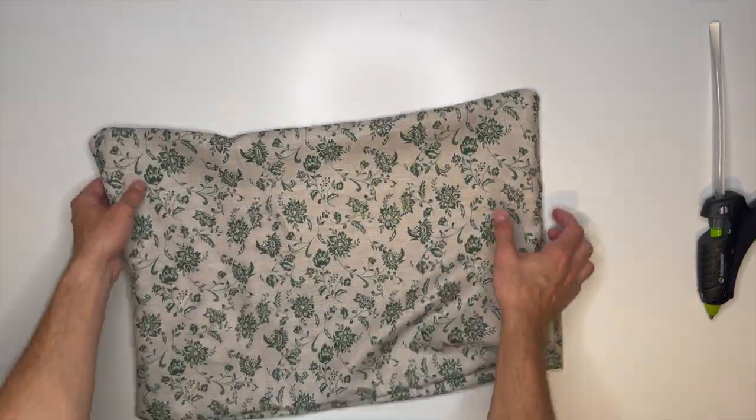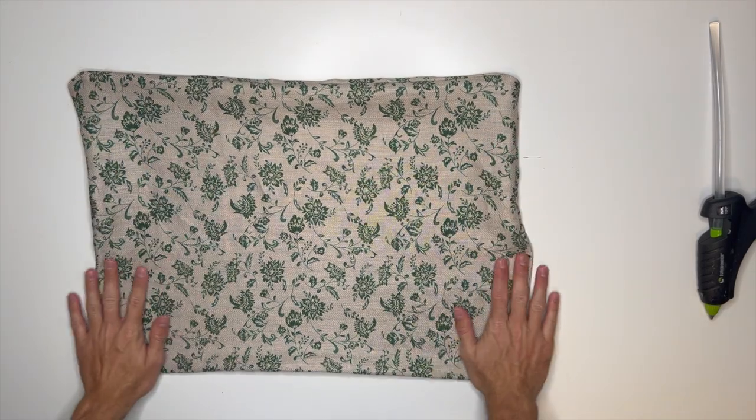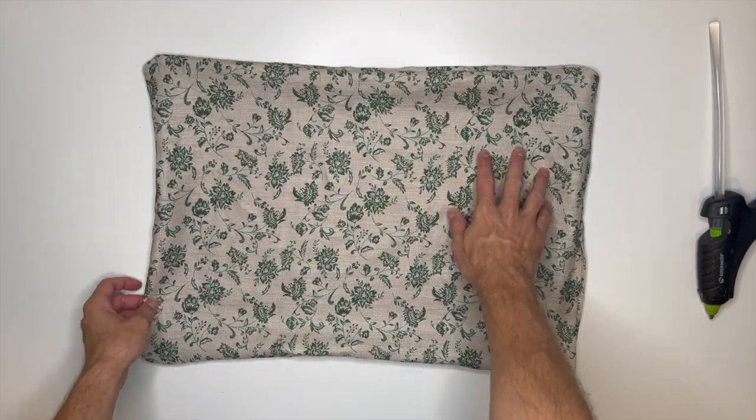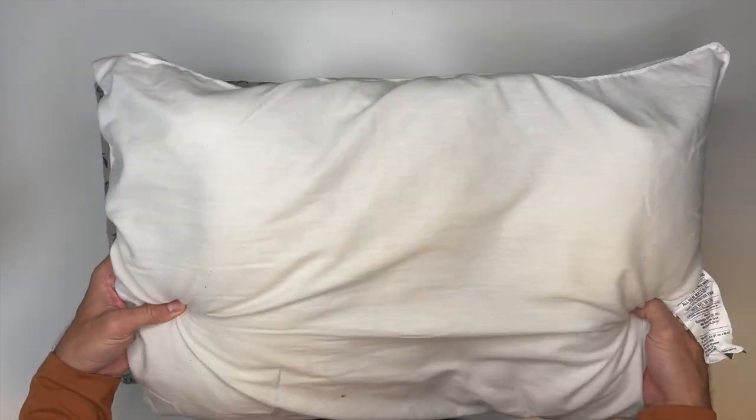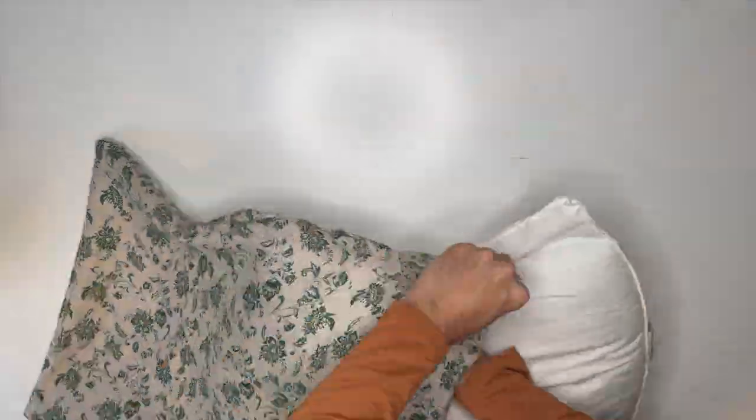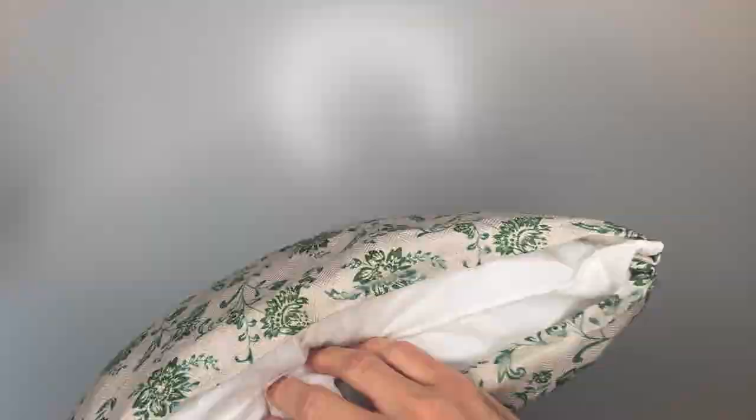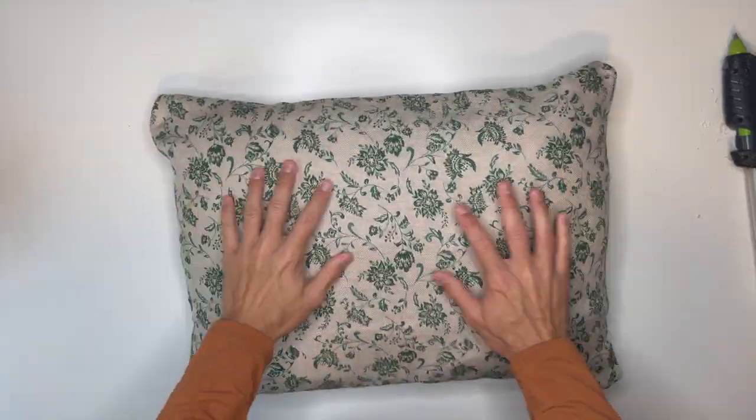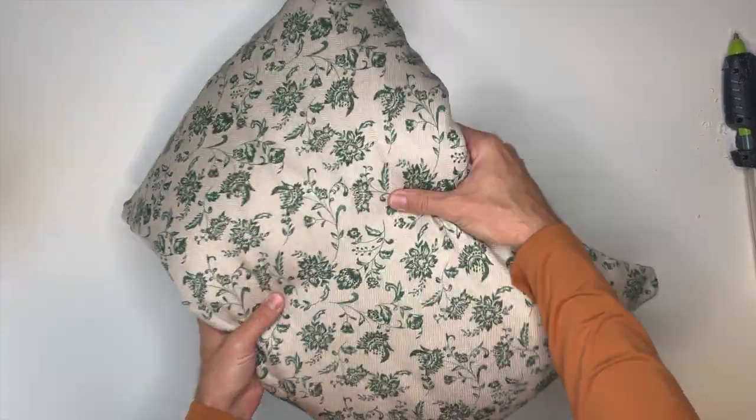And through the opening that we still have in the pillowcase, you could very easily stuff it with some polyfill that you can get from Walmart or the craft store. But I happen to have a spare pillow, so I just opened up the last side all the way again and very carefully inserted the pillow into the pillowcase. I hot glued the last side back together, made sure our pillow was nice and secure and fluffed it up a bit, and that completes this project.